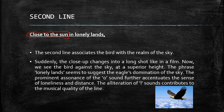The phrase 'lonely lands' suggests the eagle's domination of the sky. The prominent assonance of the O sound in 'close' and 'lonely' further accentuates the sense of loneliness and distance. The alliteration of L sounds — 'close,' 'lonely,' 'lands' — contributes to the musical quality of the line.